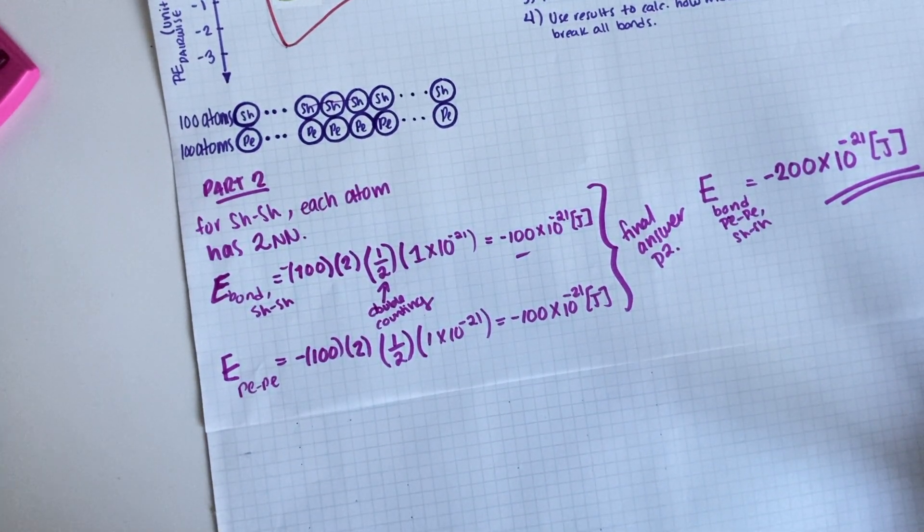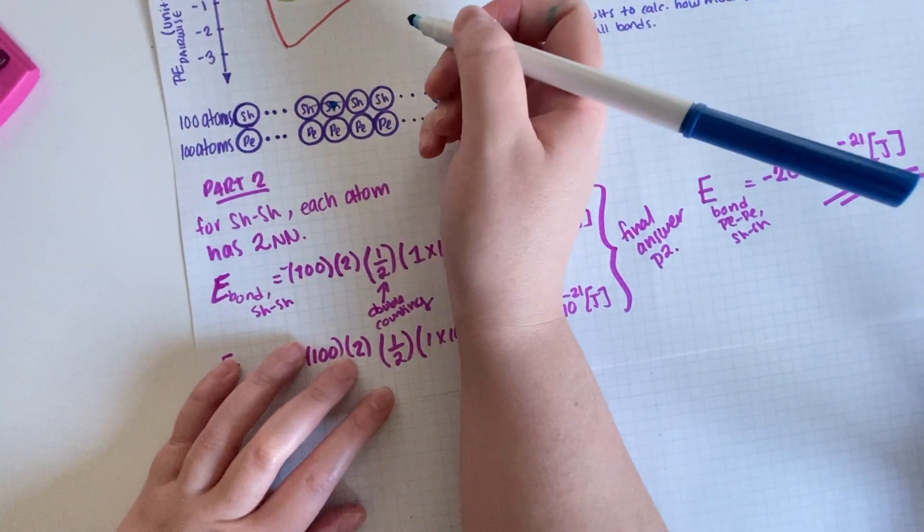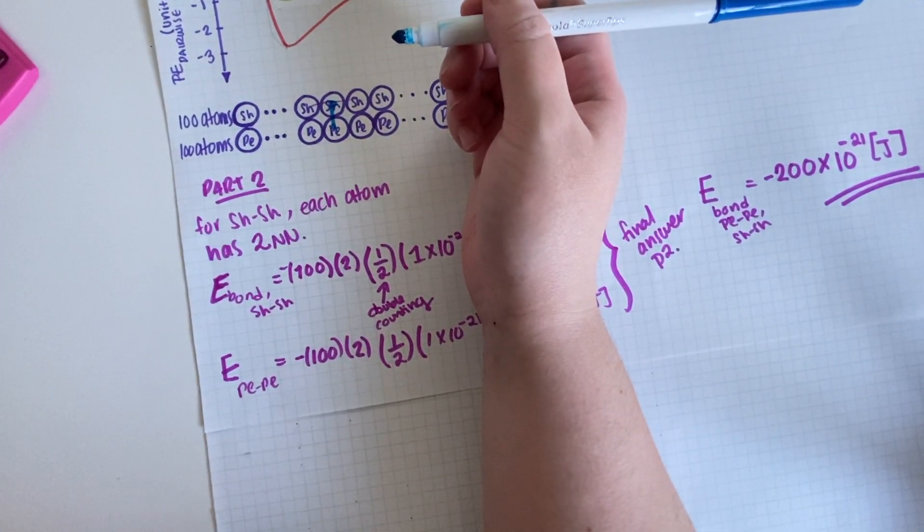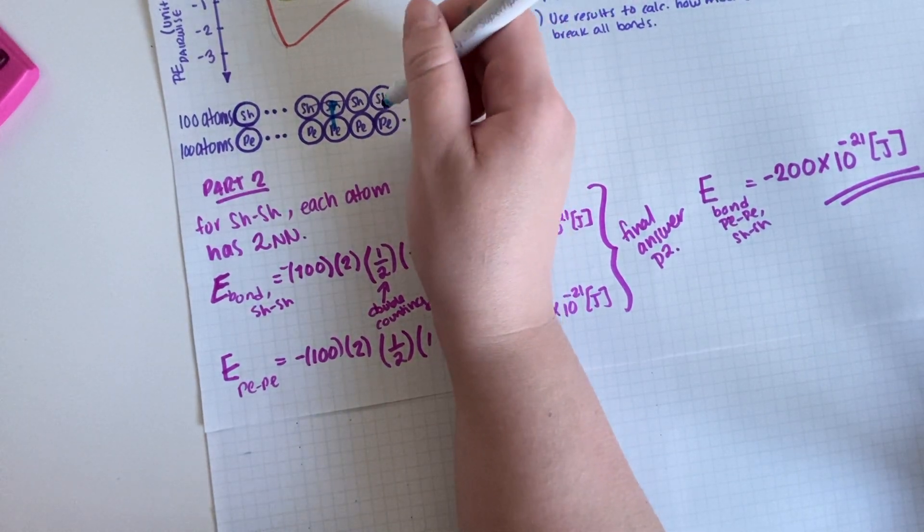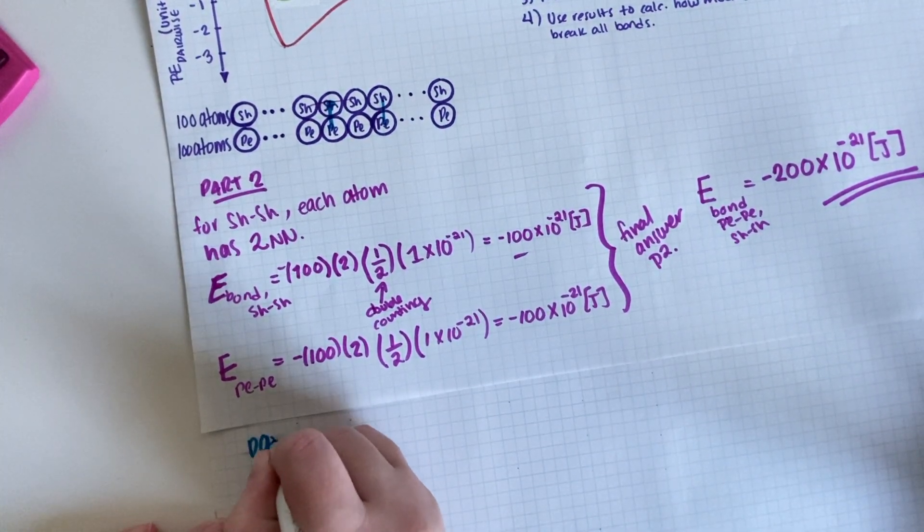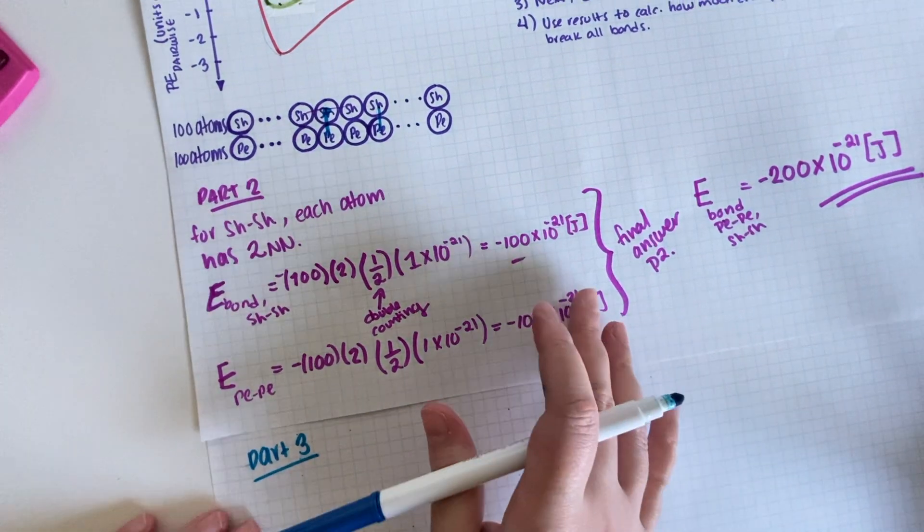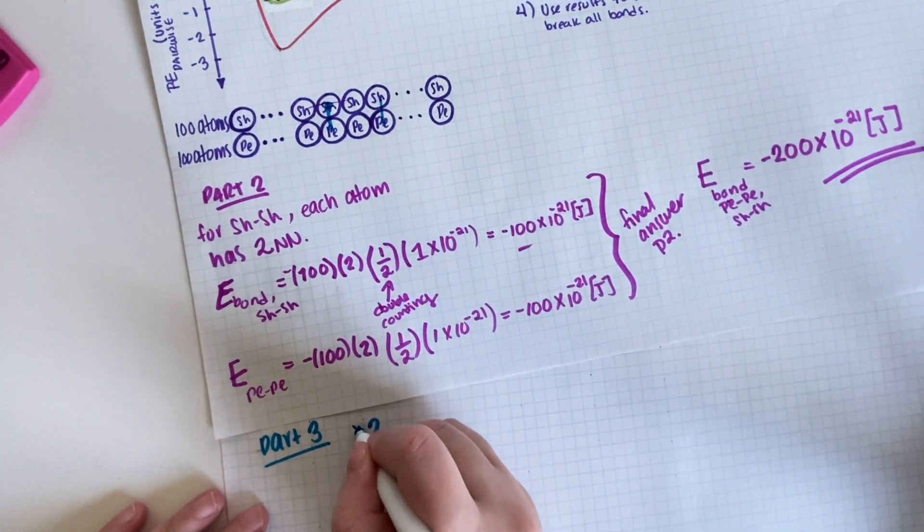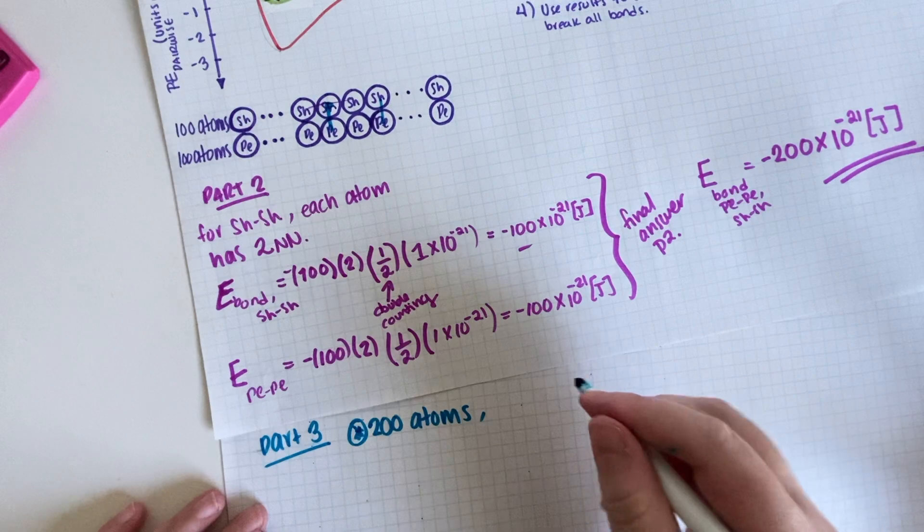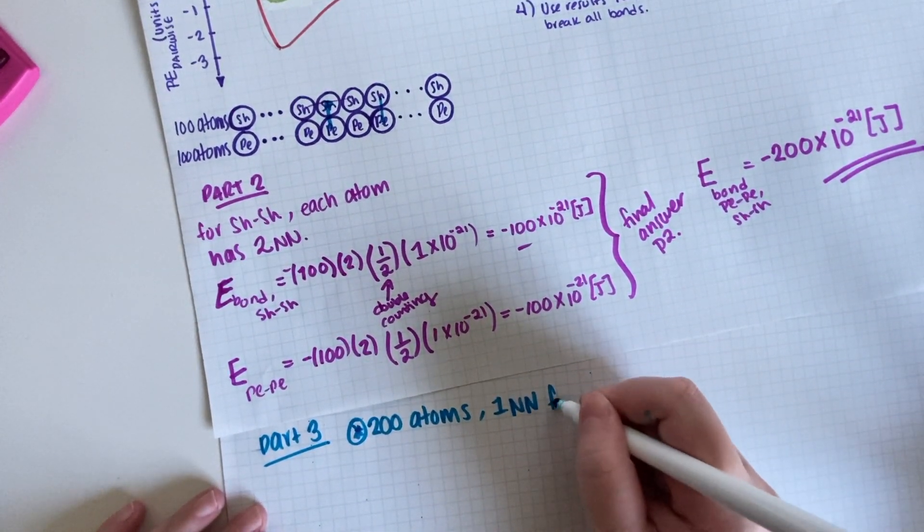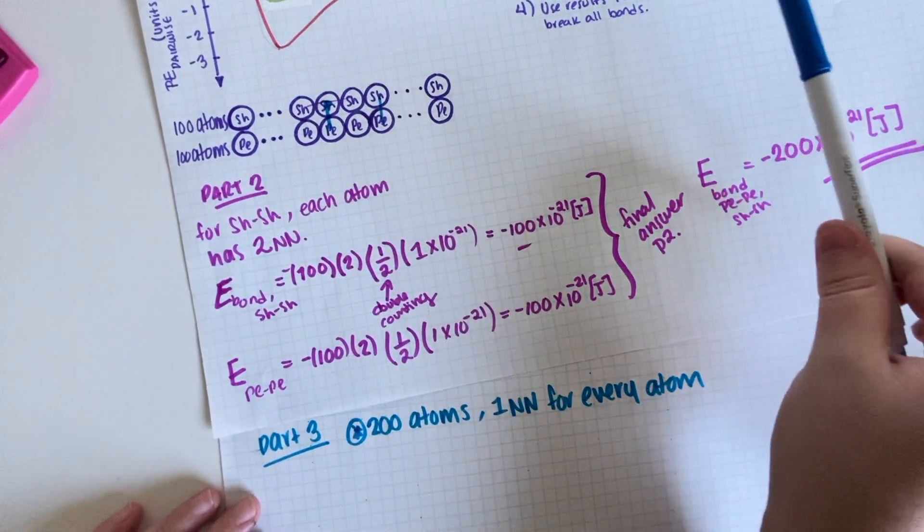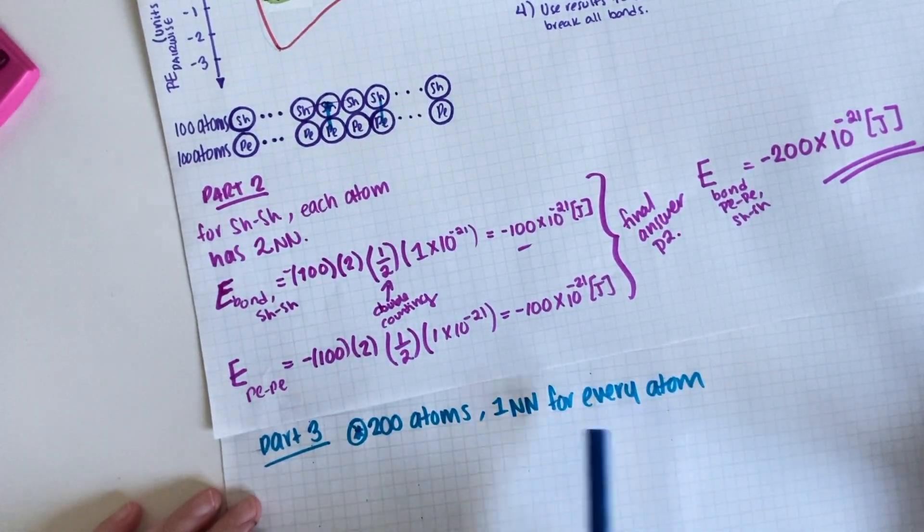So if you are a Sheldonium—let's just say you are this Sheldonium—how many nearest neighbors Coopertoniums do you have? So just one. Right? And if you are a Coopertonium, how many nearest neighbors Sheldoniums do you have? Just one. So for part three, we have 200 atoms, one nearest neighbor for every atom in terms of the restriction that it has to be different because it's part three.